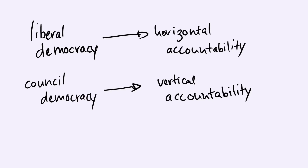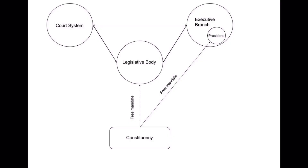In the American status quo, accountability works loosely like so. Most of the accountability is horizontal. The public cannot directly influence the judicial system, nor can it influence the executive branch to a large degree. In fact, the public can only elect the head of the executive branch, but it cannot weigh in on the appointments made by the elected president. What influence the masses do have is limited to the free mandate principle and the lack of recall power. By comparison, here's what a council democracy offers in terms of restructuring the government and redefining accountability.